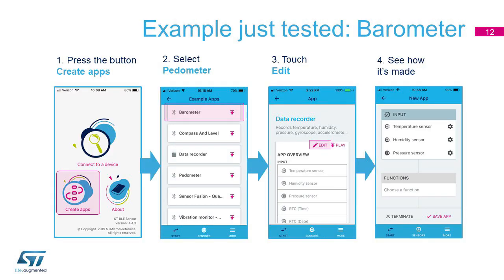We've just checked out the first barometer app. What is interesting to note is that each app can be inspected, and that each sensor that is being used or accessed has its own settings that can be modified. Each app has inputs, functions, and outputs. We will check these out in more detail in the next video.